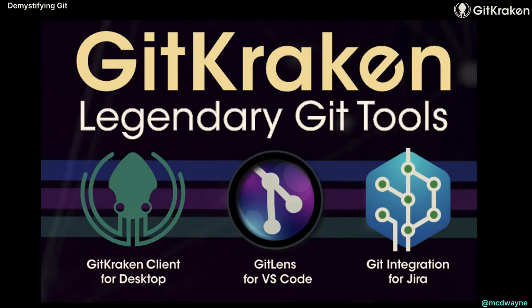I work for GitKraken — we make awesome things. GitKraken Client is a desktop app to manage Git on your desktop. It's a GUI, but it's also got a CLI built in, so everybody should be able to use it. GitLens, if you're using VS Code, no reason not to use it — it's free, open source, and amazing: line-by-line Git blame and annotation. And Git integration for JIRA is just what it sounds like.